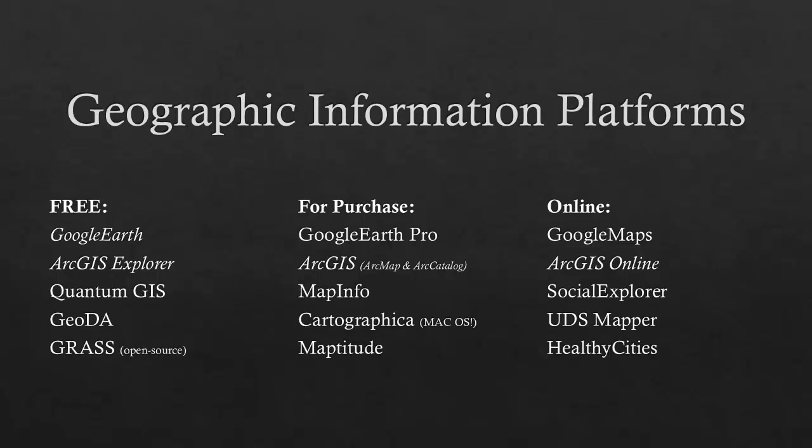Moving online, we have Google Maps, which most everyone is familiar with — a very simple routing service and a way to look things up, get street views, and quickly explore existing data. Then there's ArcGIS Online.